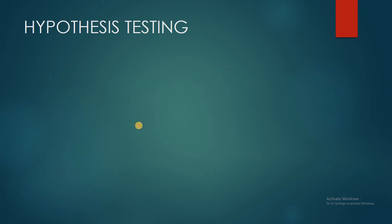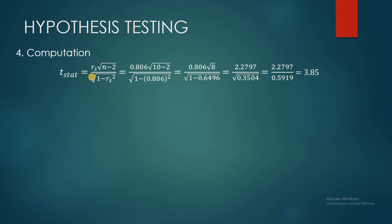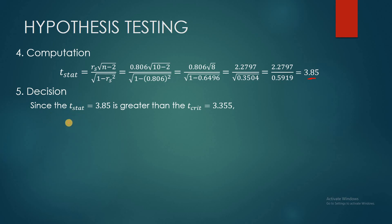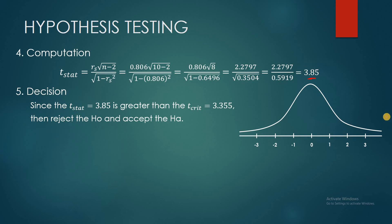Step four is the computation. The formula is: the computed r multiplied by the square root of the degrees of freedom, divided by the square root of 1 minus the square of the computed r. Substituting the values correctly, you end up with a value of 3.85. Step five — the decision: since the t-statistic of 3.85 is greater than the t-critical of 3.355, we reject the null hypothesis and accept the alternative hypothesis. The value 3.85 falls in the shaded critical region, which is why we reject the null.